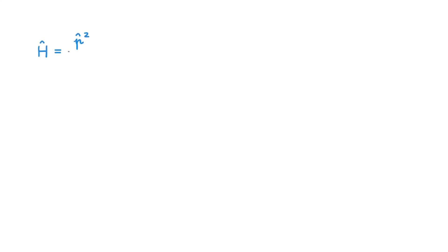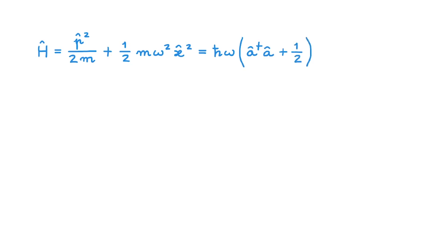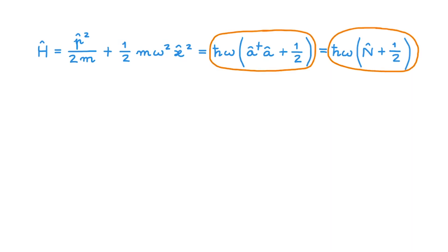Let's start by writing the Hamiltonian operator of the quantum harmonic oscillator. Although this is the expression that will look familiar to most of you, we learned in the video on the ladder and number operators that we can rewrite this Hamiltonian in terms of the ladder operators, or in terms of the number operator. Today we'll mostly use these two last expressions. We're going to use several other results from that video, so do make sure you're comfortable with these operators. You can find all the necessary details in the video linked in the description if you need a refresher.